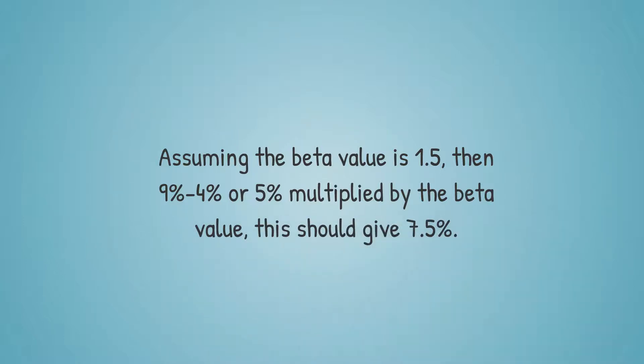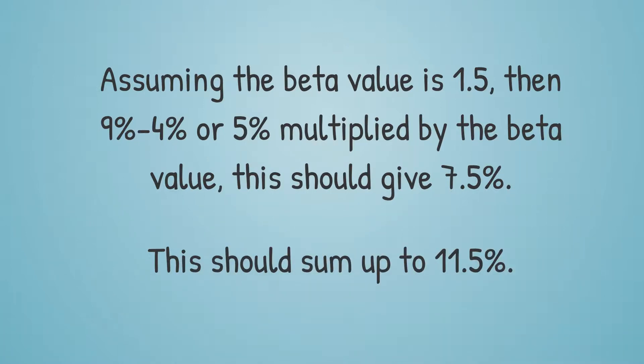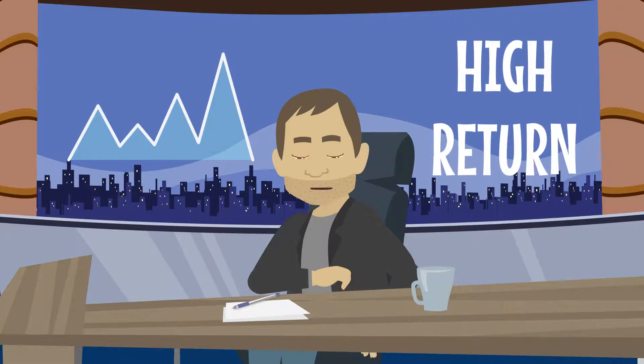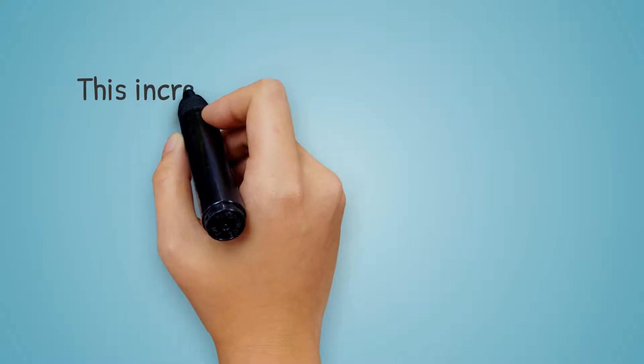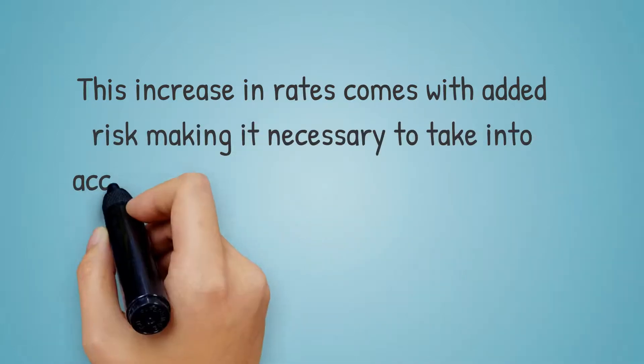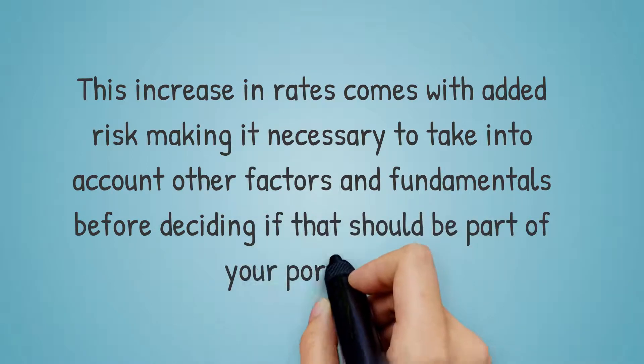This should give 7.5%. You should now add the result of the risk-free rate. This should sum up to 11.5%. The higher the beta value for a stock, the more likely it is to have an increased rate of return. However, this increase in rate comes from the added risk, making it necessary to take into account other factors and fundamentals before deciding if that should be part of your portfolio.